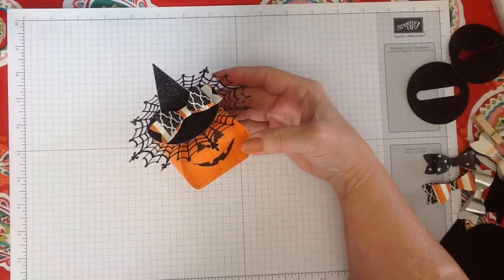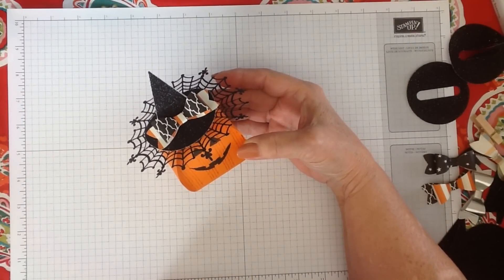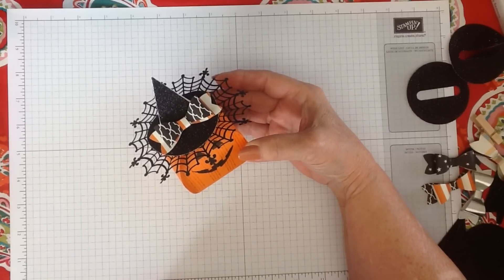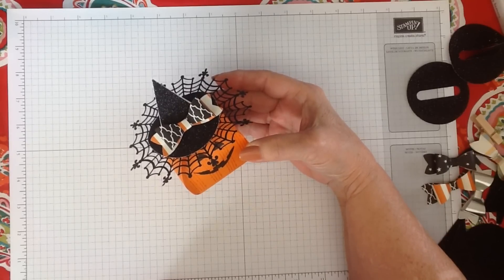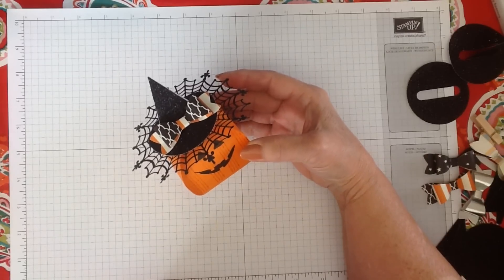Hi, I'm Janet Baker, and I just got back from Stampin' Up's Founder's Circle. While I was there, I made everyone a cute little bag with a witch's hat, and they told me I should do a video on it, so here we are.